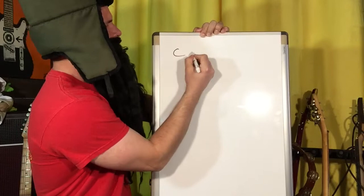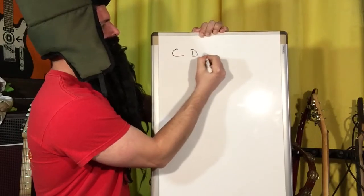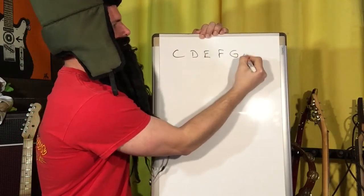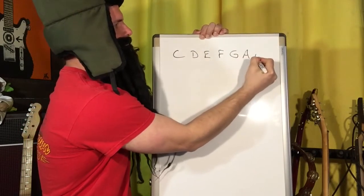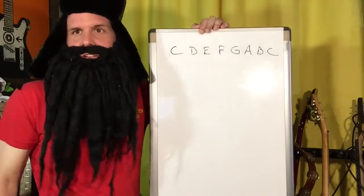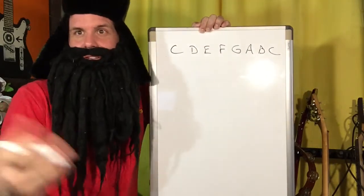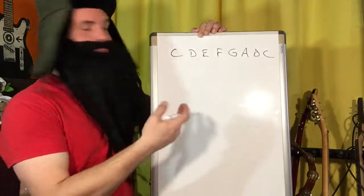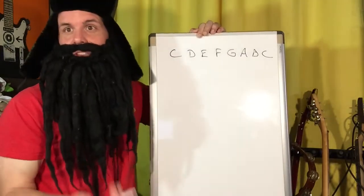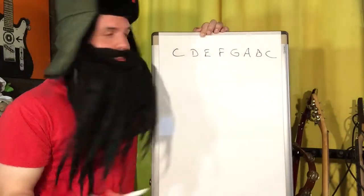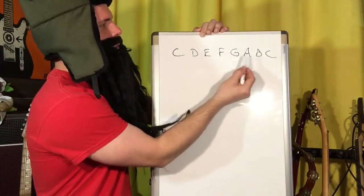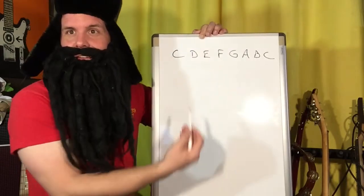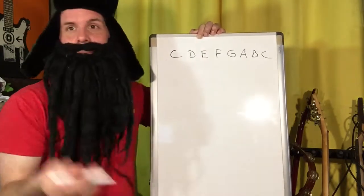All you have to remember is it starts at C, and there's no such thing as H, and there's no sharps or flats. That's why we picked this one to memorize — it's super easy. You don't even have to remember whole, whole, half, whole, whole, whole, half. That information is in there.